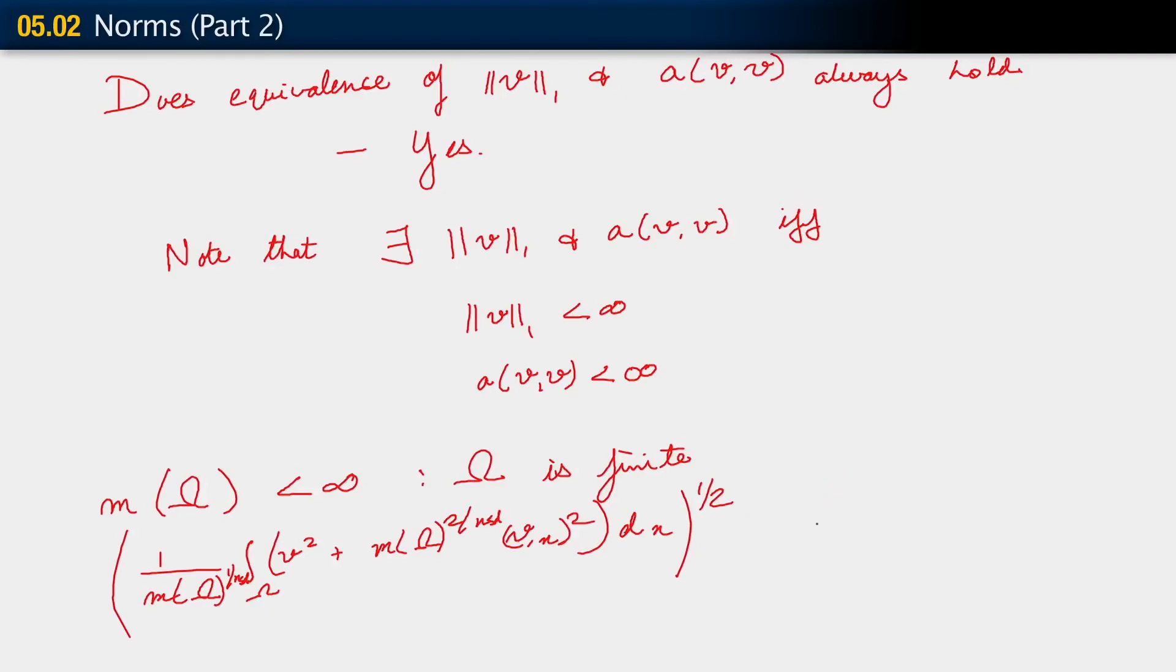Now, if you are comparing this on the side with the energy norm, which is of this form. The energy norm is integral over omega, v comma x, e, v comma x, dx to the half power. You're comparing these two. What is missing on the right-hand side is this term.